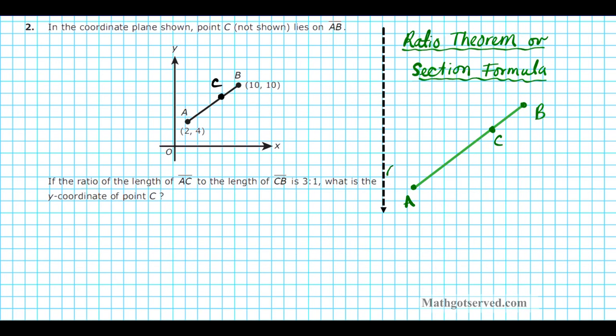Now let's say point A is X1, Y1 for the first coordinate and point B is X2, Y2. And the ratio of AC to BC is N to M. So let's write it down. Ratio of AC, the length of AC to CB is N to M. Let's switch it around. Let's do M to N, since M comes first in the alphabet. So the ratio is M to N. So if you have this set up.